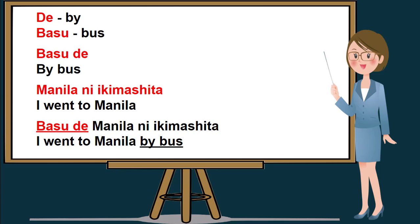We will be adding basu de in order to make it I went to Manila by bus. If you notice, the construction of the Nihongo sentence — by bus or basu de — is located in the beginning of the sentence, followed by Manila ni ikimashita. So, basu de should be in the beginning of the sentence, followed by Manila ni ikimashita.